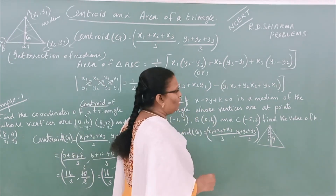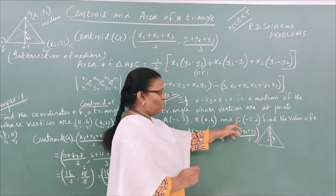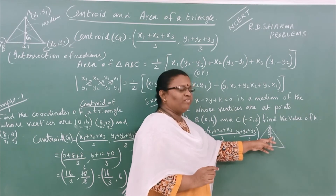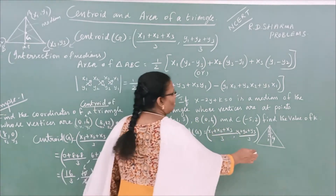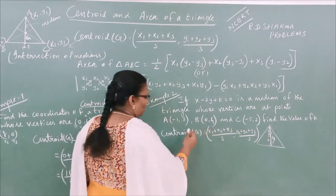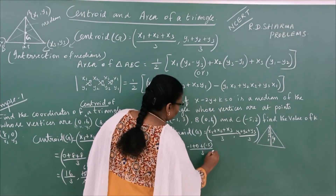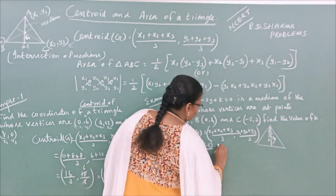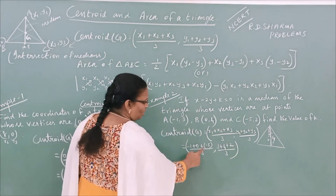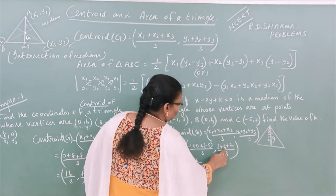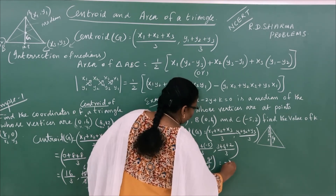The centroid of the triangle: minus 1 and 4. So 5 by 3 comma — 3 plus 4 plus 2, that is 3 plus 4 plus 2 by 3. The answer: minus 6 by 3 comma 9 by 3. So your answer is minus 2, comma 3.